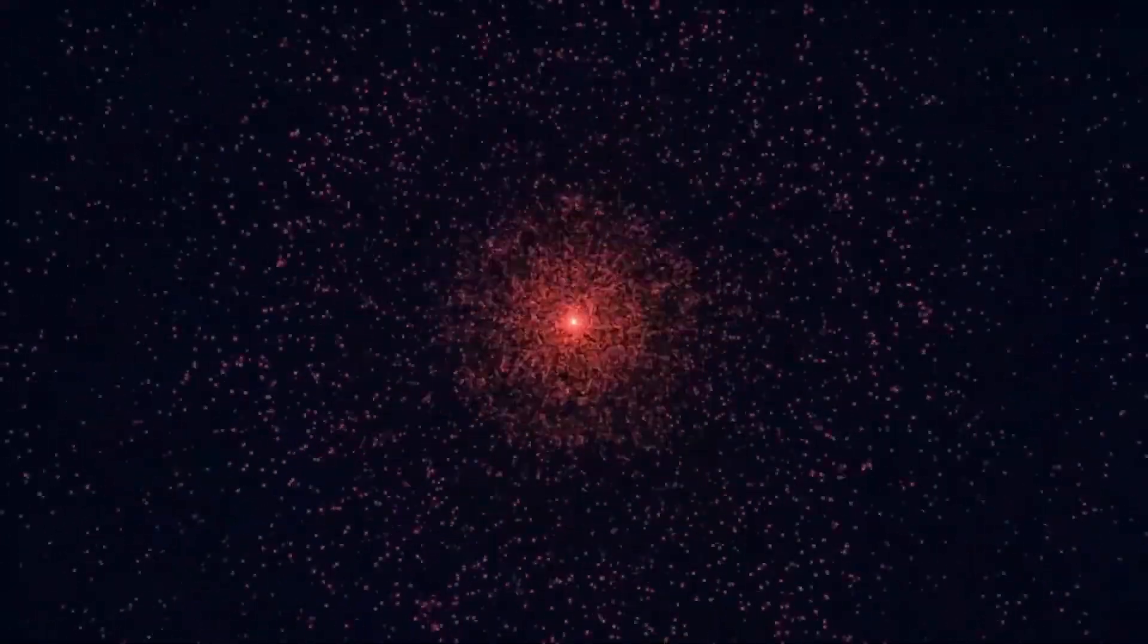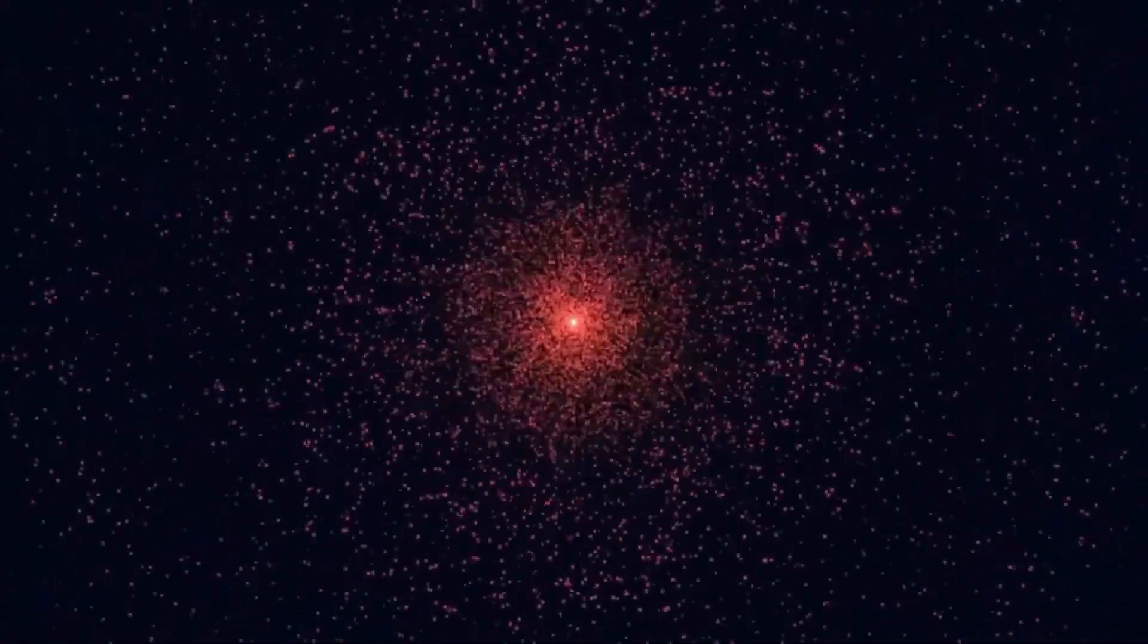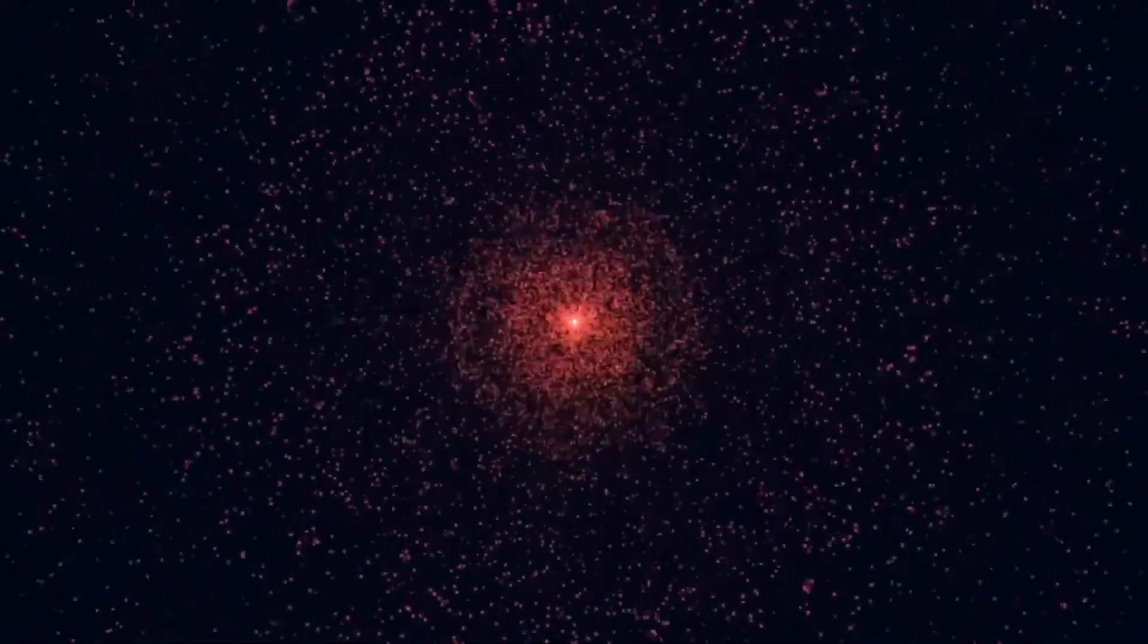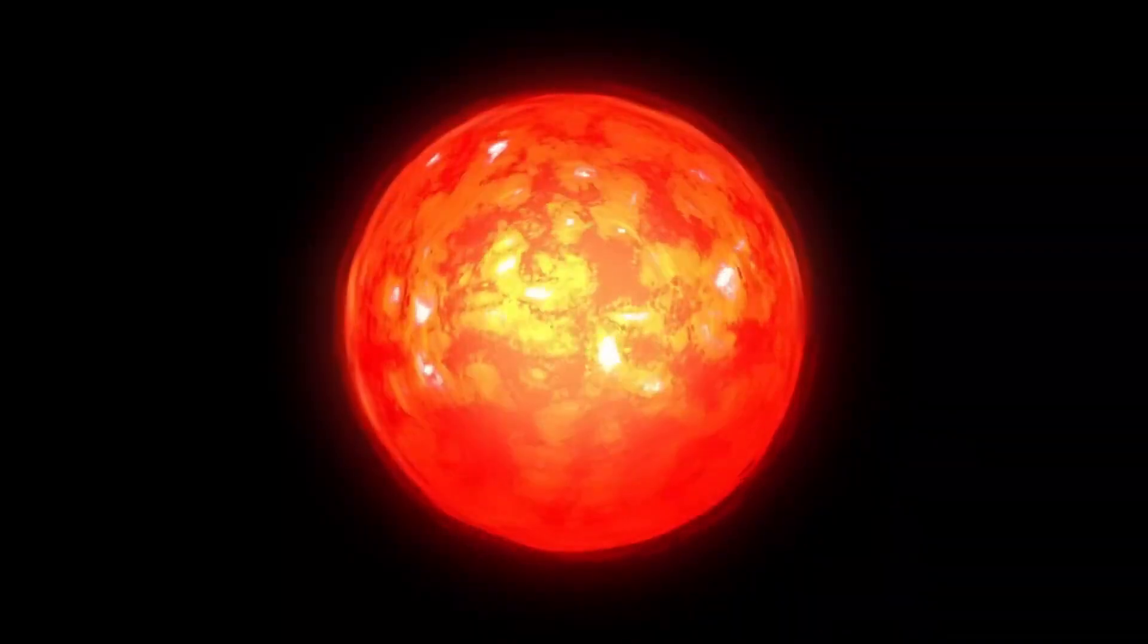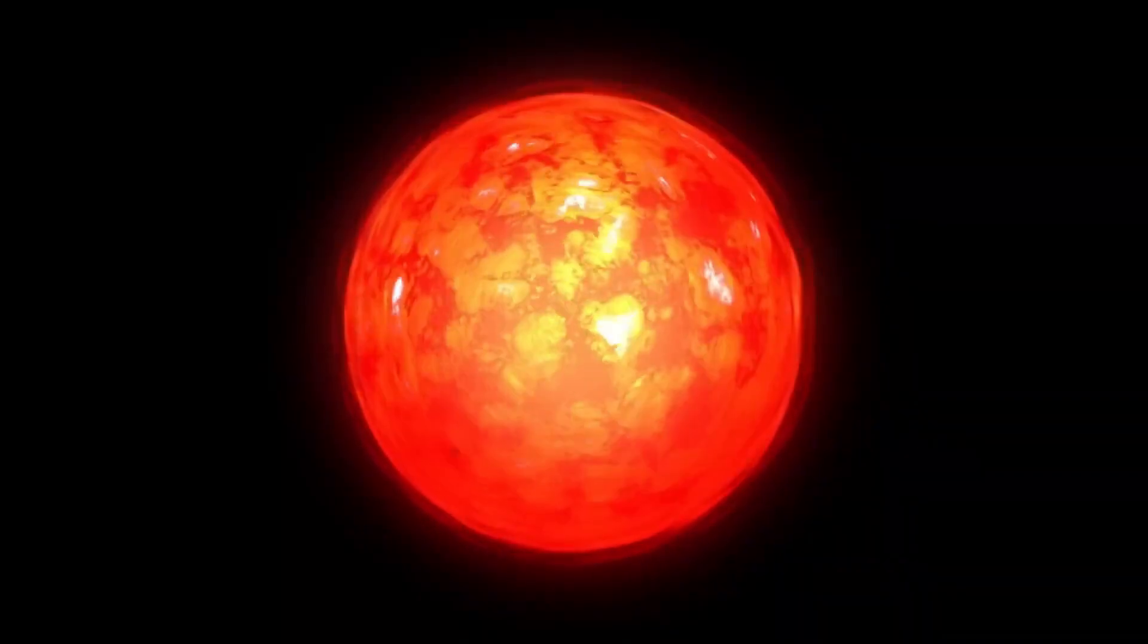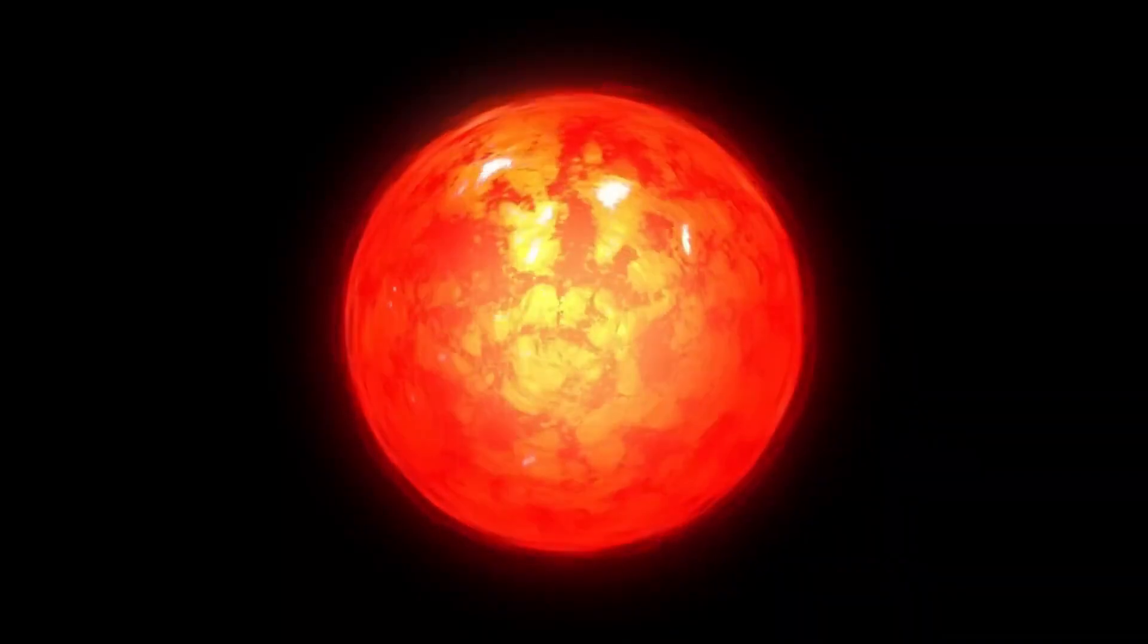Red supergiants are notorious for their instability, shedding mass at a staggering rate as they expel gas and dust into space. This material doesn't just vanish. It becomes the raw material for new stars, planets, and even the building blocks of life. Betelgeuse's recent behavior suggests it might be shedding mass more aggressively than usual, a sign that it's approaching a critical turning point.